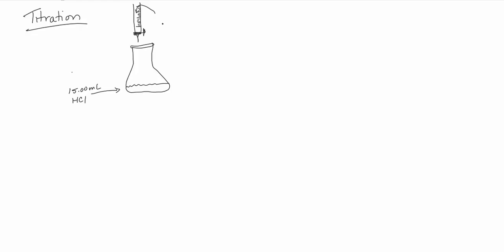Usually titrations occur with acids and bases. So if in my burette I have 0.500 molar NaOH, then I'm going to drop this into my acid solution — remember, there's an indicator in there — until I get a color change. That color change shows us what's called the end point, which could also be called the equivalence point. What that means is the moles of my acid are equal to the moles of my base.